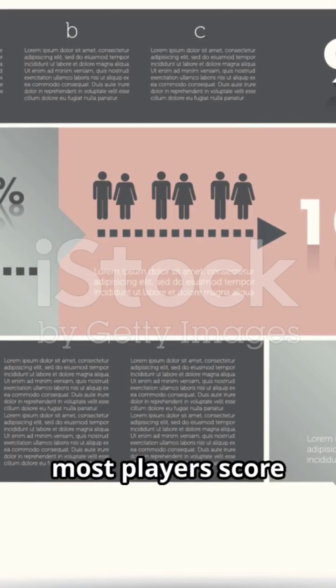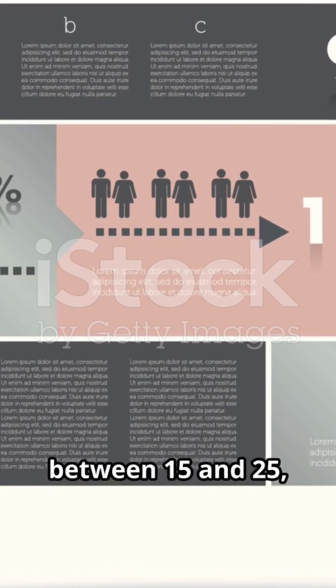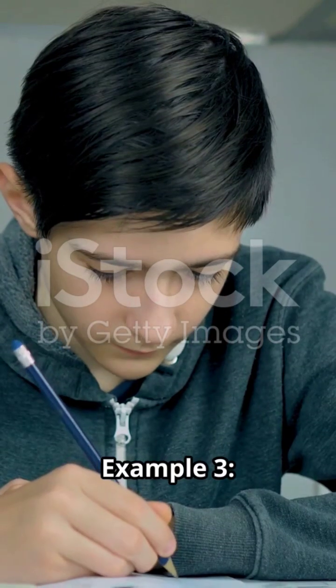The box plot shows most players score between 15 and 25, but one top scorer reaches 30. Example 3.